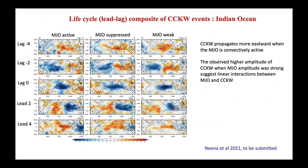Using lead-lag composites, we examine the main spatiotemporal structure of CCKW evolution during MJO active, suppressed, and weak states. CCKWs propagate more eastward — more evident in the Hovmöller diagram — when the MJO is convectively active. The higher CCKW amplitude during strong MJO amplitude clearly indicates a linear interaction between the MJO and CCKWs. This is over the Indian Ocean.